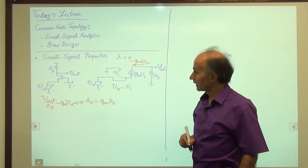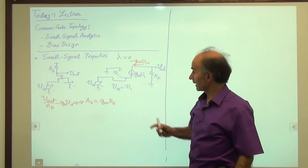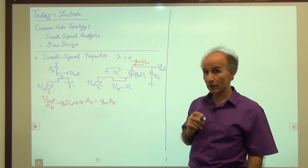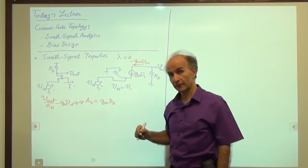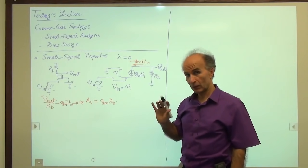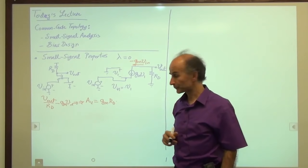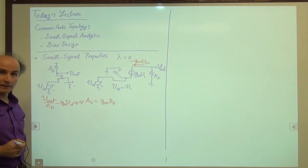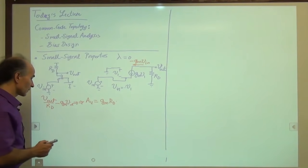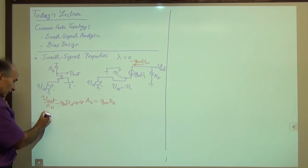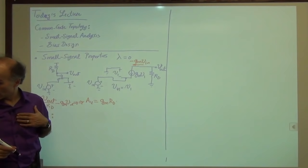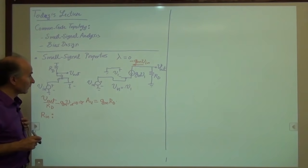That's good. We can remember that. Just remember that this is under the condition that lambda is zero. If lambda is not zero, it's a little more complicated, and we don't do that in this course. The next quantity we need to find is the input resistance Rin. For the input impedance, we take the circuit and put it in a box. We set all independent sources to zero, then come from outside, apply voltage, and measure the current.